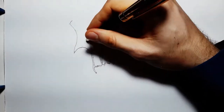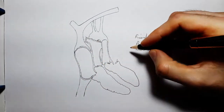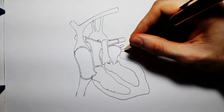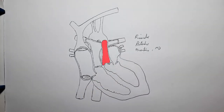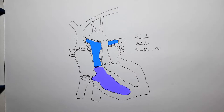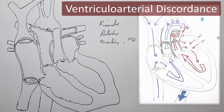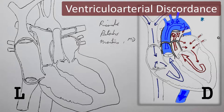The great difference, and the reason we have dextro and levo, is that in LTGA what had its place switched were not the great vessels but rather the ventricles. So we actually have the aorta draining the left heart and the pulmonary trunk draining the right heart — except that the aorta drains the right ventricle because the right ventricle is in the left heart, and the pulmonary trunk drains the left ventricle because the left ventricle is in the right heart. In dextro TGA the great vessels are switched, whereas in LTGA the ventricles are switched.